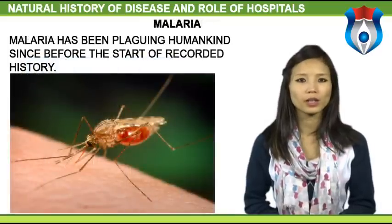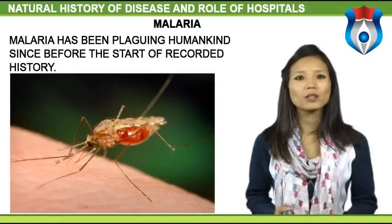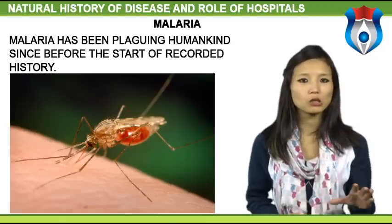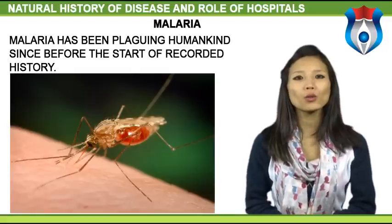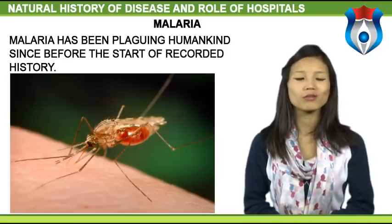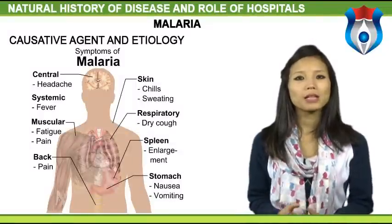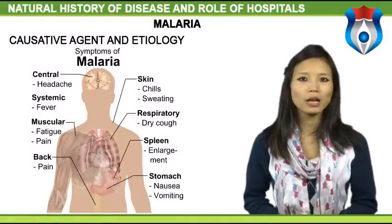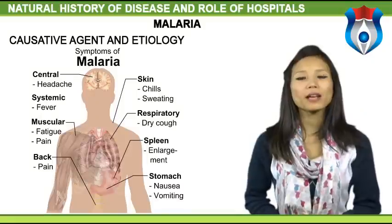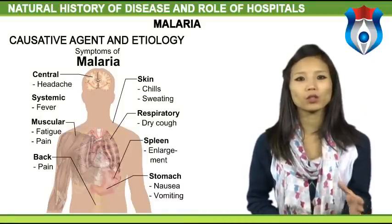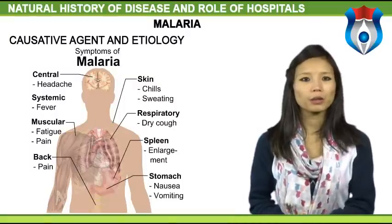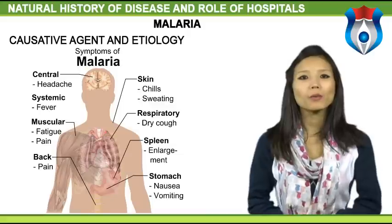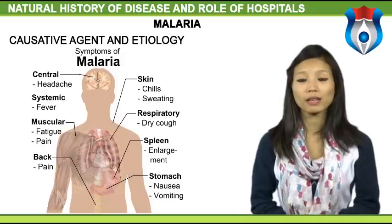Malaria has been plaguing humankind since before the start of recorded history. Annually there are between 215 and 500 million cases reported, leading to millions of deaths every year. In Africa alone, malaria kills more than 1 million people annually, including hundreds of thousands of children. Malaria is a zoonotic disease spread from human to human by one of 30 to 50 of the 430 species of the arthropod vector Anopheles. The female mosquito infects a human host by taking a blood meal, introducing one of four types of human-affecting Plasmodium parasite: P. vivax, P. ovale, P. falciparum, and P. malariae. Of these, P. falciparum is the most prevalent in endemic regions, causing 50% of malaria infections and 90% of deaths.